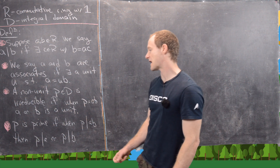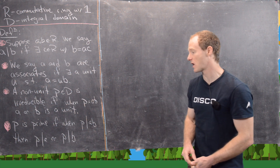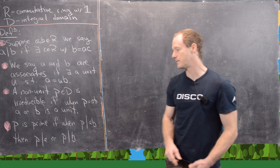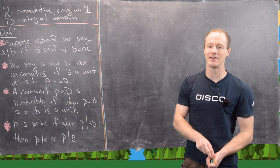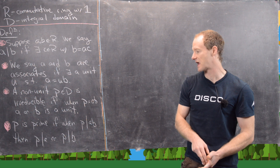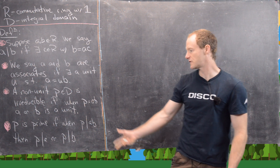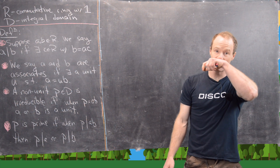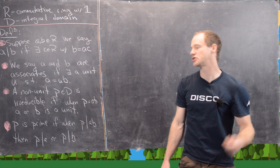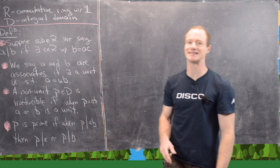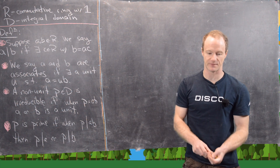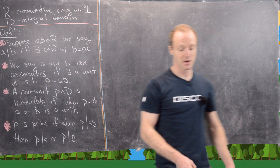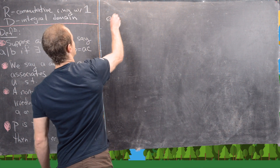Then we say that P is prime if when P divides AB, that means P either divides A or P divides B. That's something you prove about prime numbers in the integers, but here we're taking it as the definition of primeness within an integral domain.